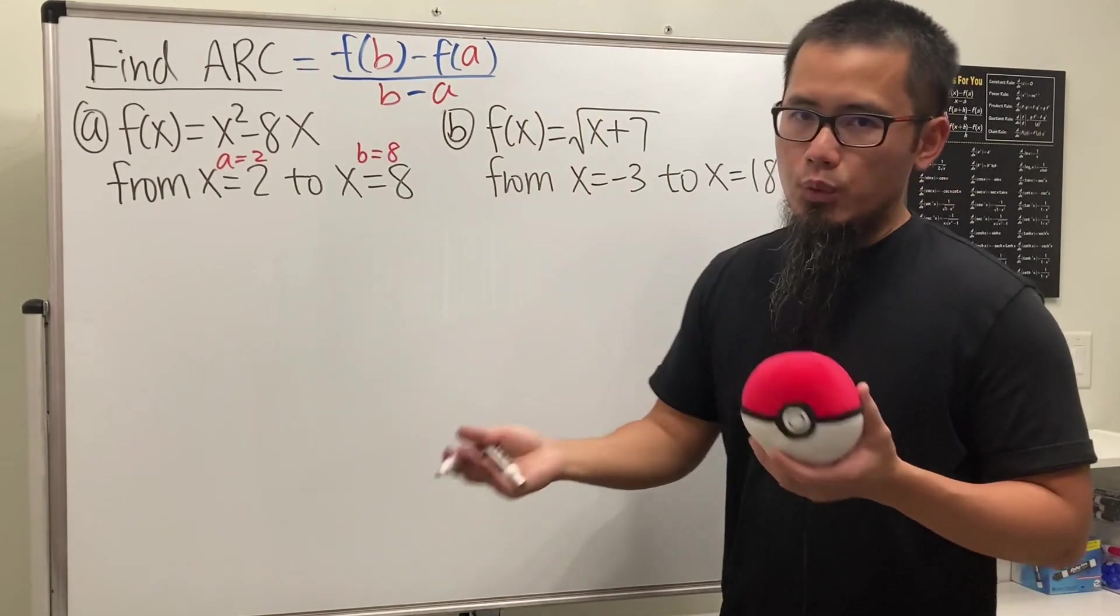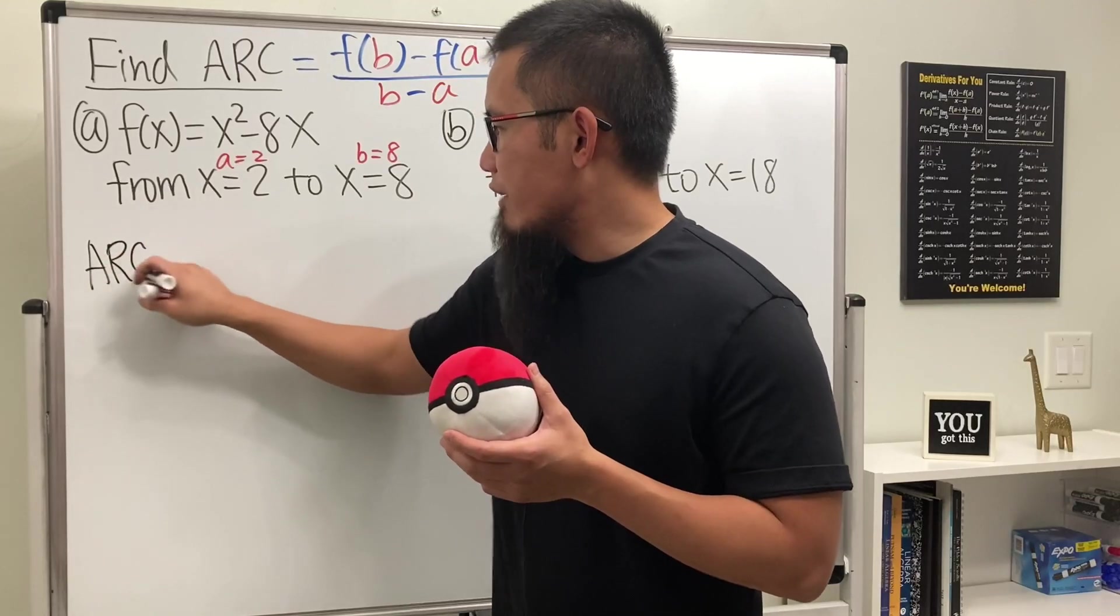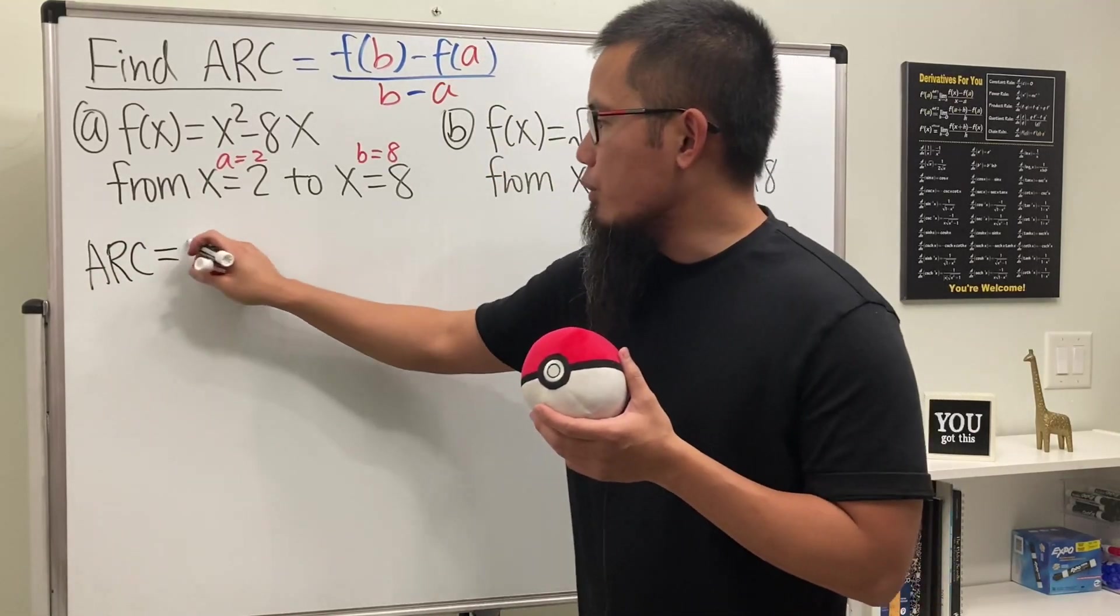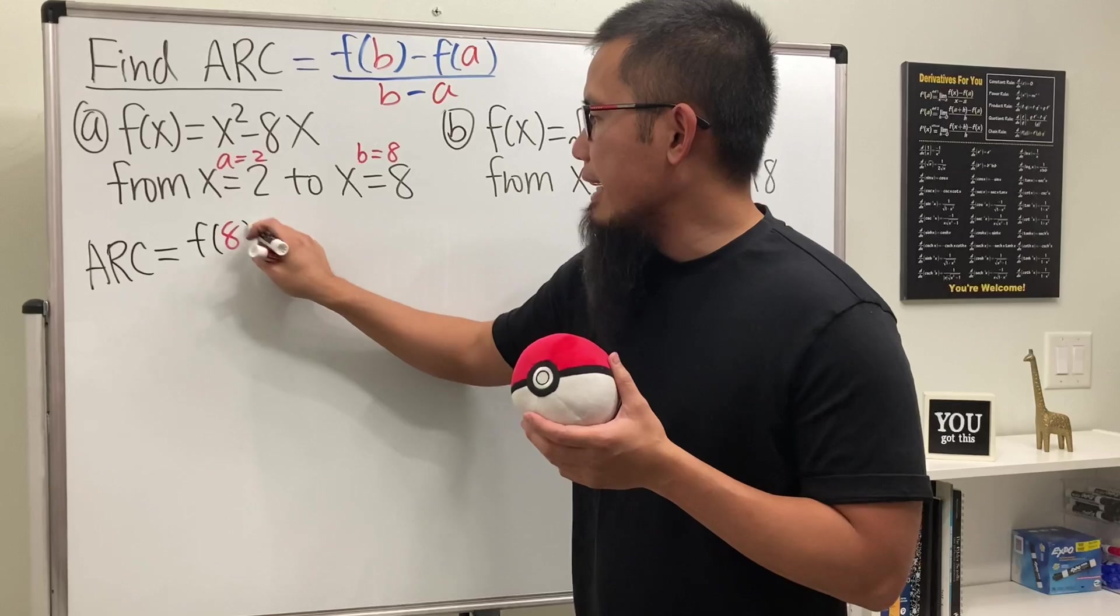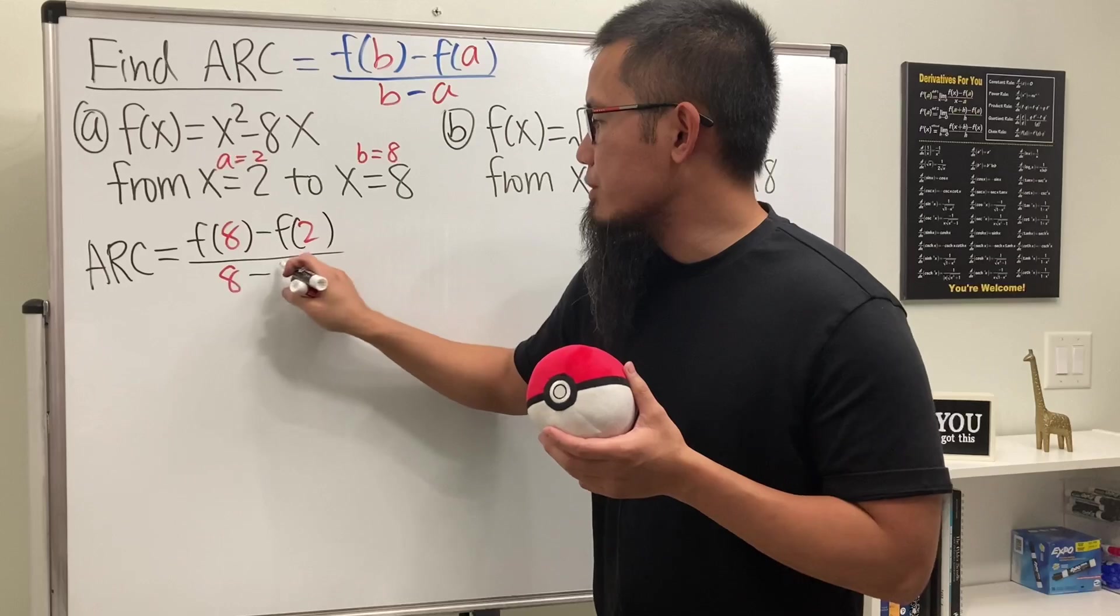We just have to plug into the formula and work it out. So let's put down ARC for the average rate of change. We first do f of 8 minus f of 2 and then we divide it by 8 minus 2.